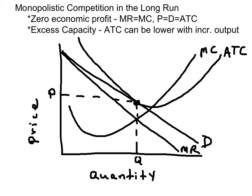To get output, we use the MR equals MC rule, labeled Q. Travel on up to the demand curve to get your price.